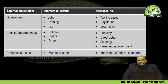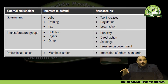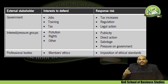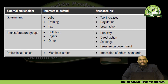External stakeholders: the government is mainly concerned with tax — it wants businesses to pay tax on a timely basis, and wants them to offer jobs and training to people in the community where they operate. If a business does not comply, the government can increase taxes, impose stricter regulations, and can file cases against the business — for example, for excessive pollution, it may fine the company at first, and if the business keeps polluting, the government may shut it down.